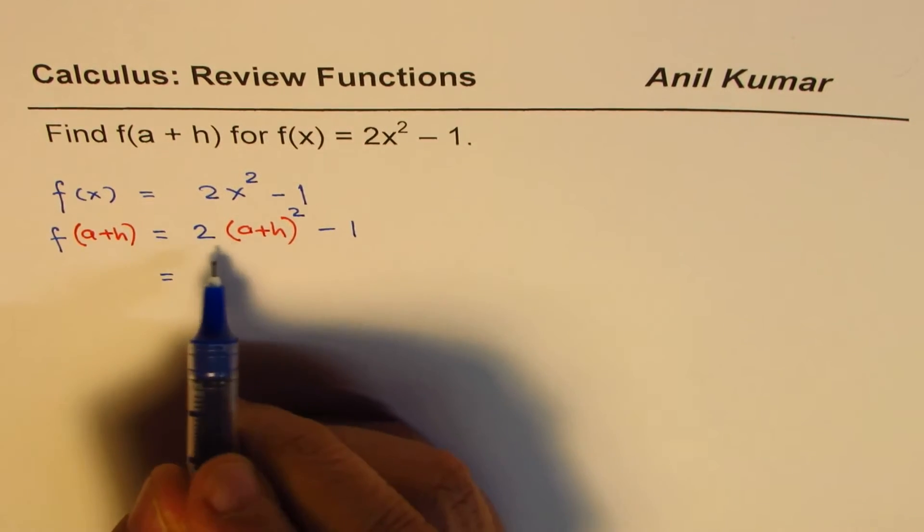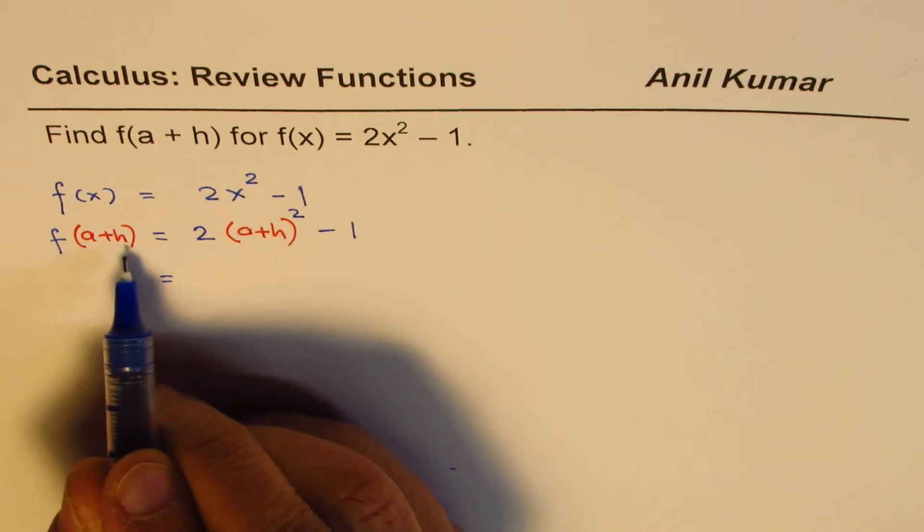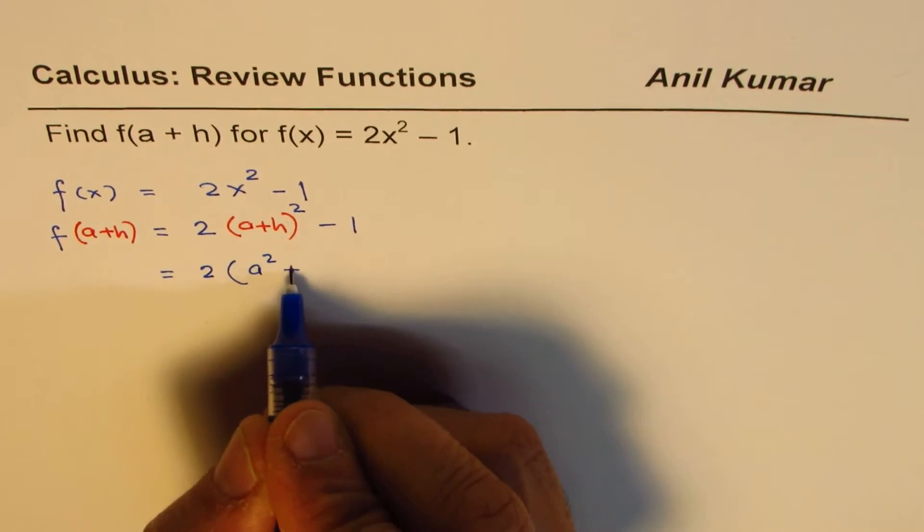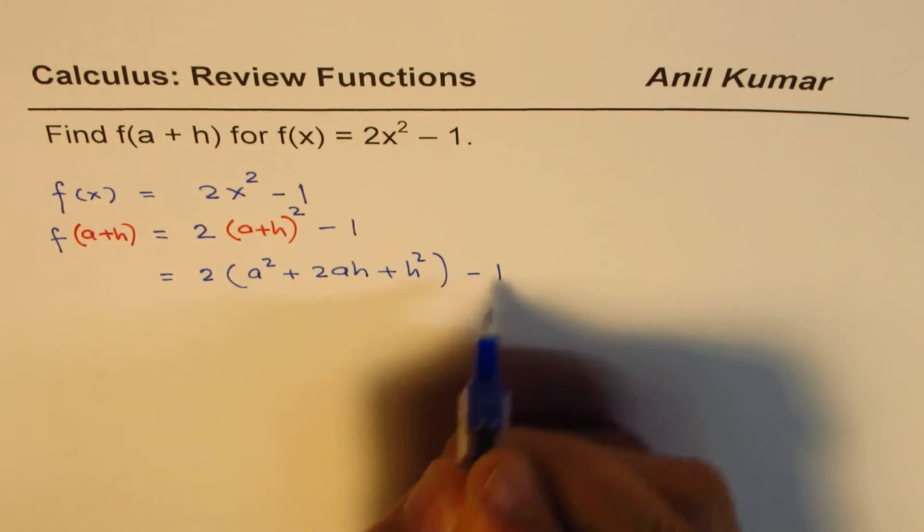We'll expand this, simplify, and that will be an expression for f(a+h). So it will be 2 times (a² + 2ah + h²) - 1.